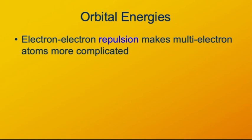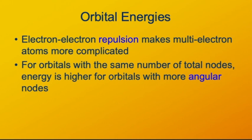These different nodal patterns in different shapes mean that the electrons in these different orbitals affect each other differently, because they spatially overlap differently. When you have orbitals with the same number of nodes, the orbitals that have more angular nodes tend to be higher in energy.